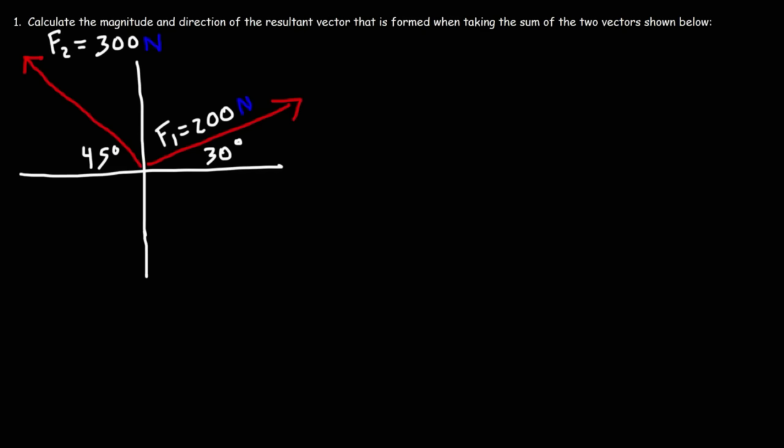In this video, we're going to talk about how to calculate the magnitude and the direction of the resultant vector that is formed when taking the sum of two other force vectors, which you can see in the diagram shown below. What we need to do is break down each vector into its component form, add the components together to get the resultant vector in component form, and then find the magnitude and direction of that vector.